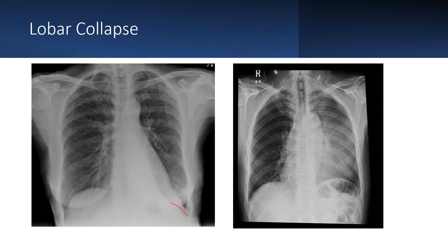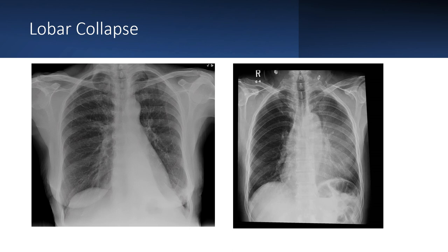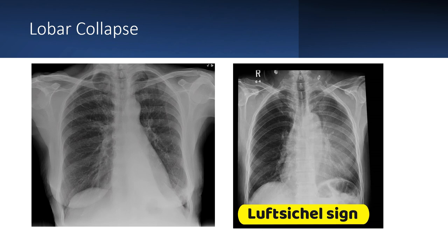If the question asks what is the next best investigation for left lower lobe collapse, the answer is bronchoscopy — which will give more information than a CT scan, even though the patient will eventually have a CT. In another chest X-ray, you can appreciate a homogeneous opacity on the left side, but the left hemidiaphragm is clearly delineated and the aortic knuckle is visible with a rim of air surrounding it. This is known as the Luftsichel sign and is classical of left upper lobe collapse.